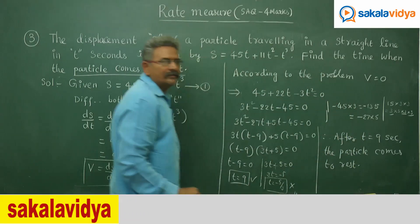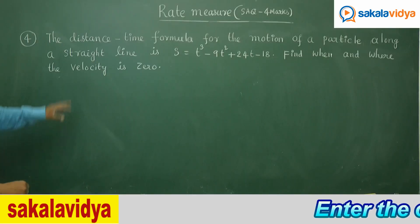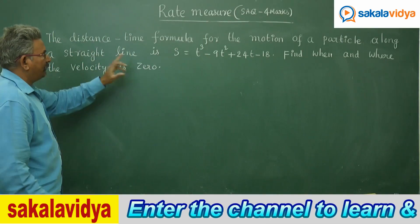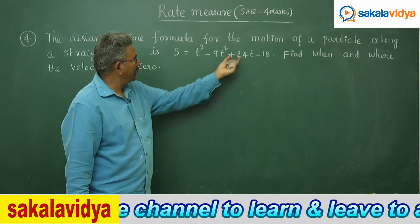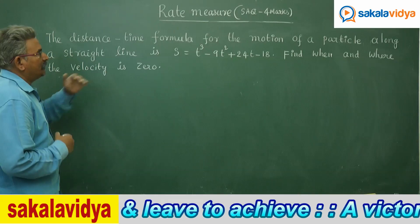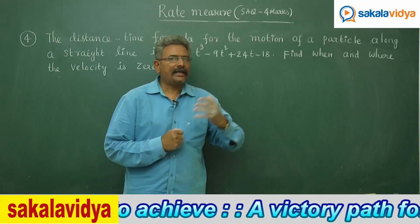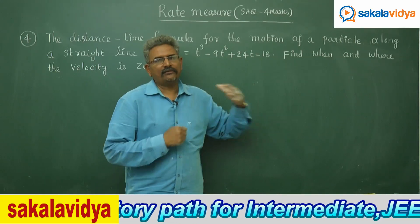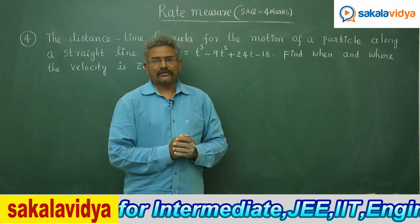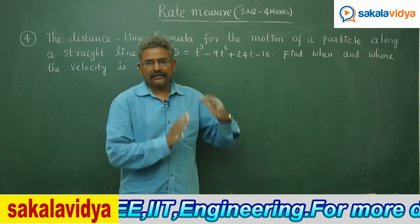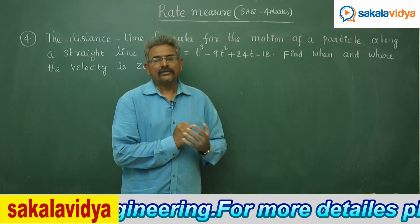The distance-time formula for the motion of a particle along a straight line is given by s = t³ - 9t² + 24t - 18. Find when and where the velocity is 0. 'When' means we evaluate t, and 'where' means at that instant t, we find the distance travelled by the particle.